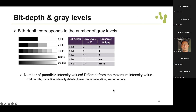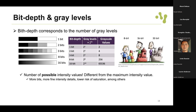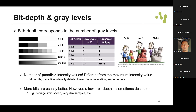The bit depth defines the number of possible intensity values - more bits means more fine intensity details and lower risk of saturation, so more bits are usually better. However sometimes you can have lower bit depth if you have storage limits or very dim samples.